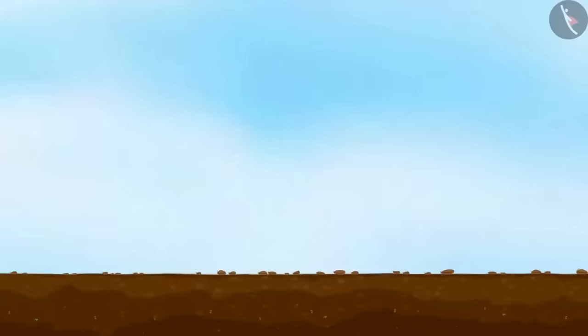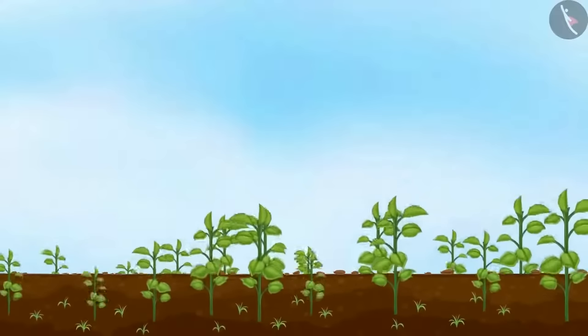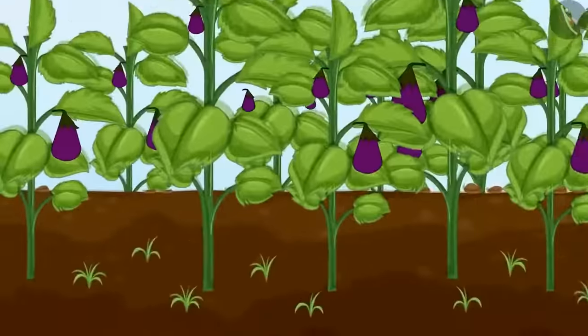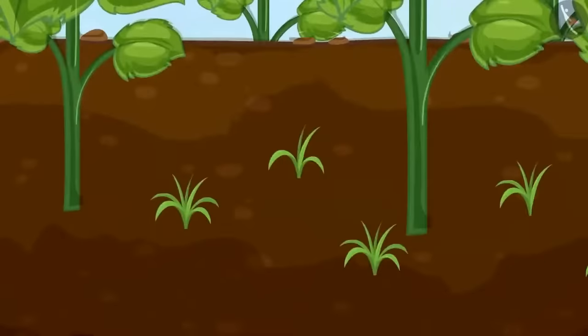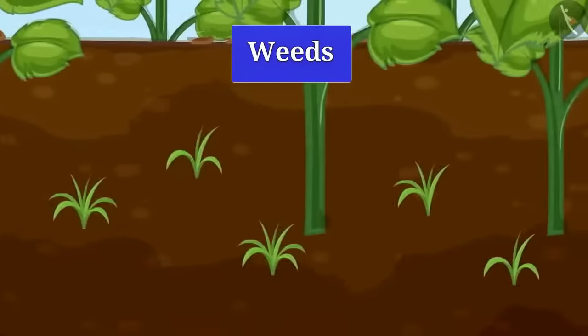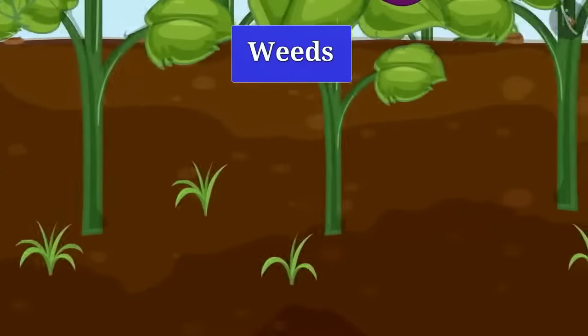Friends, if you look carefully at the grown cropland, then you can see small unnecessary plants growing with the crop. Well, these are called weeds. Do you think this weed is harmful to crop?